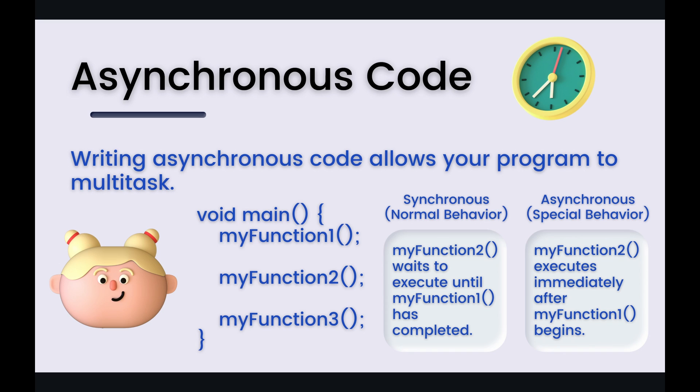With asynchronous behavior, you would start my function one and then immediately after start my function two before my function one has ever completed running. This can be really helpful if my function one takes a very long time to complete — you can start doing things in tandem and multitask, making your program a lot faster. We're going to see examples of that in the code coming up.